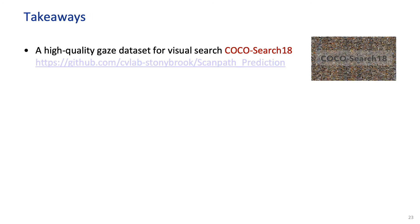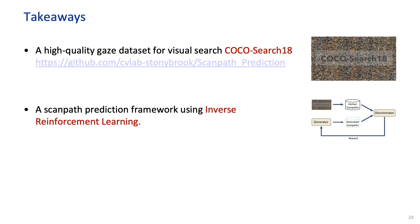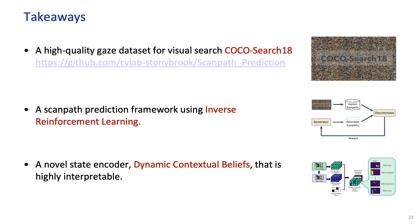So as a summary, first, we created a large-scale gaze dataset for visual search. Second, we present a novel scan path prediction framework using inverse reinforcement learning. Lastly, we propose a novel state representation called dynamic contextual belief. Thank you for listening.